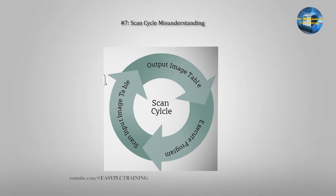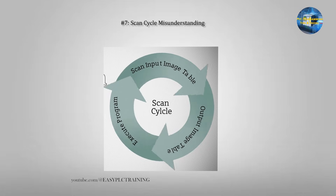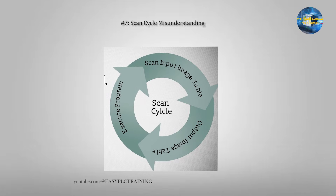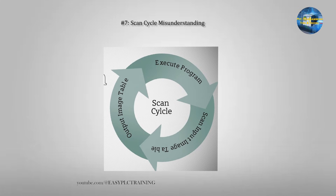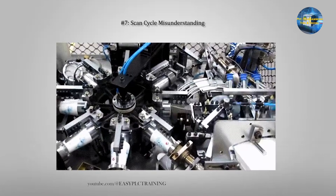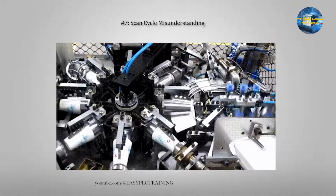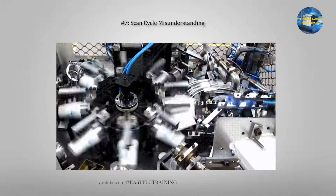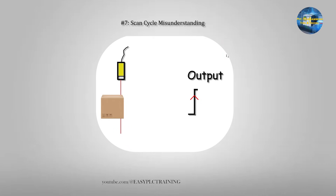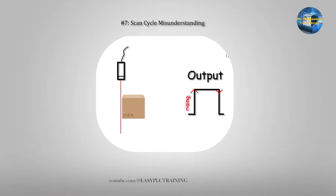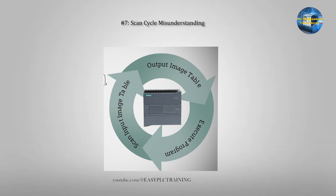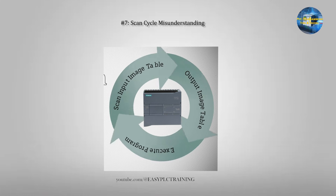Example 7: Scan cycle misunderstanding. Many beginners forget the PLC works in cycles — scan inputs, read the logic, and update the outputs. The common issue here is that one-shot or very fast pulses start to miss. To fix this, use edge detection and latching signals. The PLC scan cycle determines how the instructions behave.